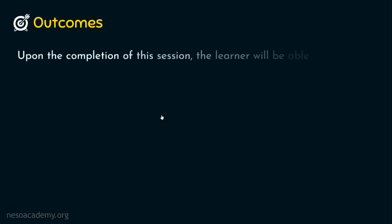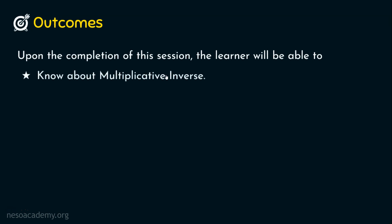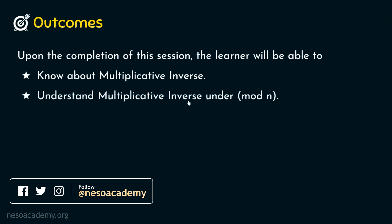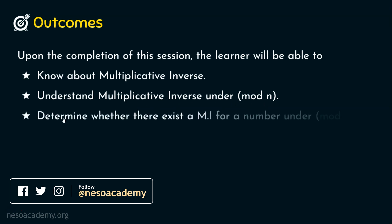Upon the completion of this session, the learner will be able to achieve three outcomes. Outcome one: we will know about the multiplicative inverse. Outcome two: we will understand multiplicative inverse under modular arithmetic, meaning numbers with mod n. Outcome three: we will determine whether there exists a multiplicative inverse for a number under modular arithmetic or not.